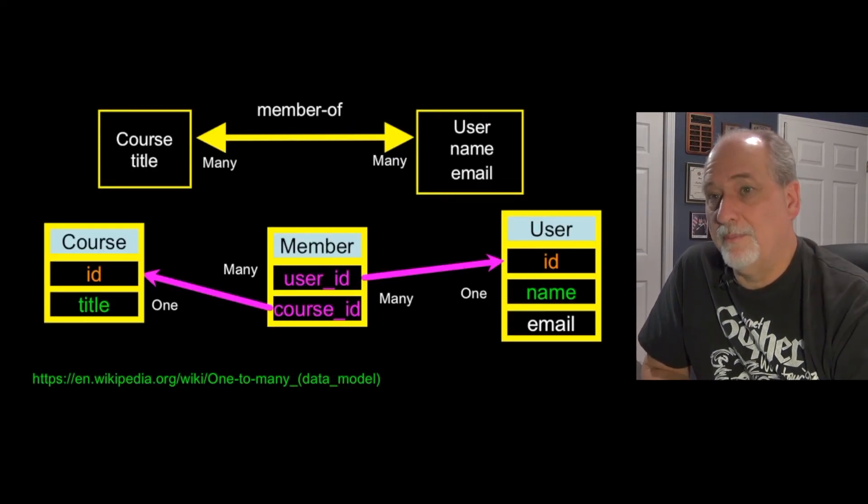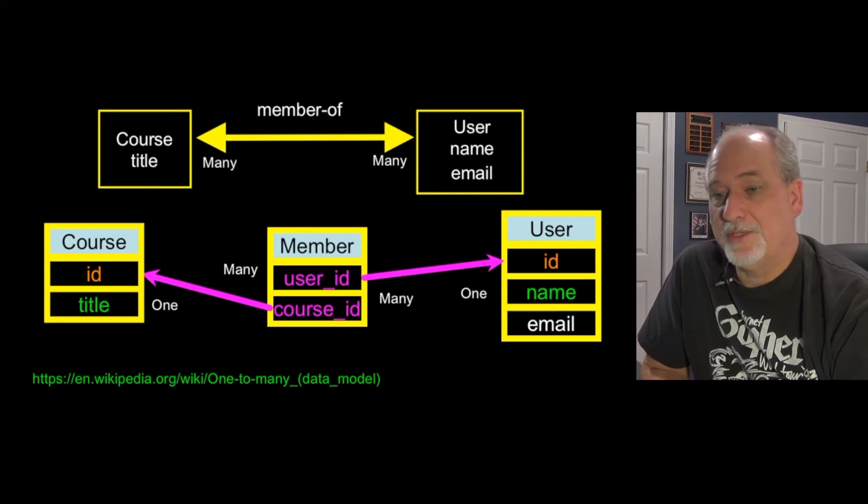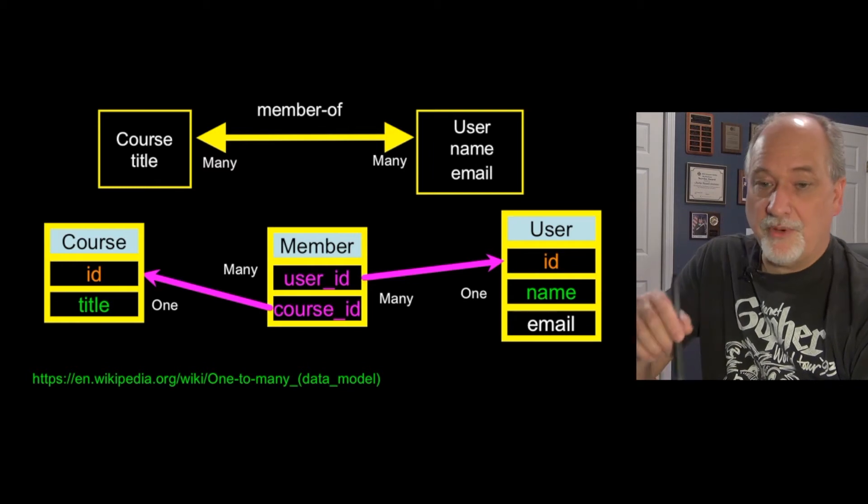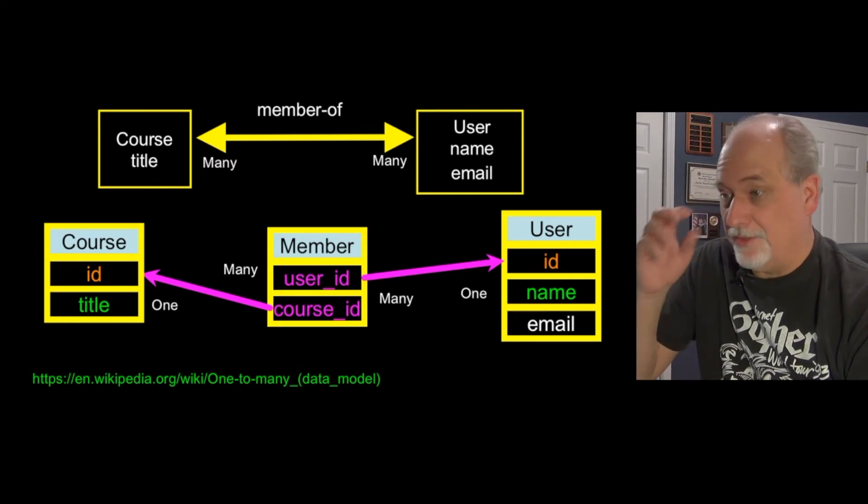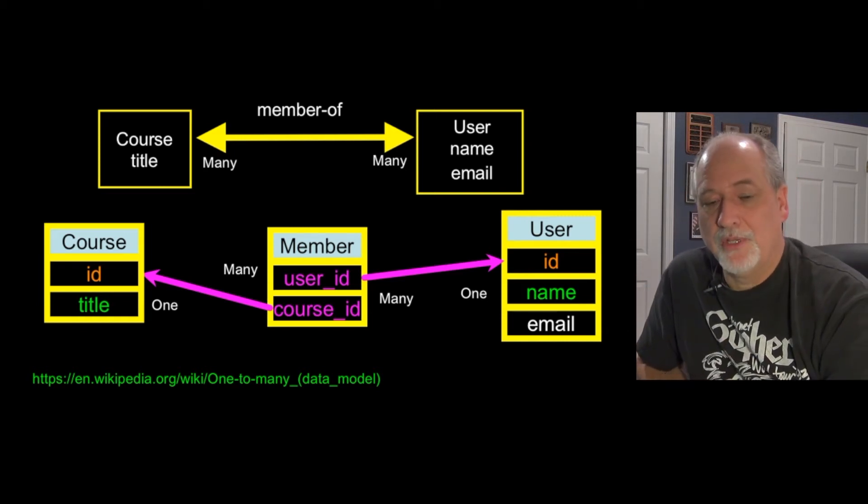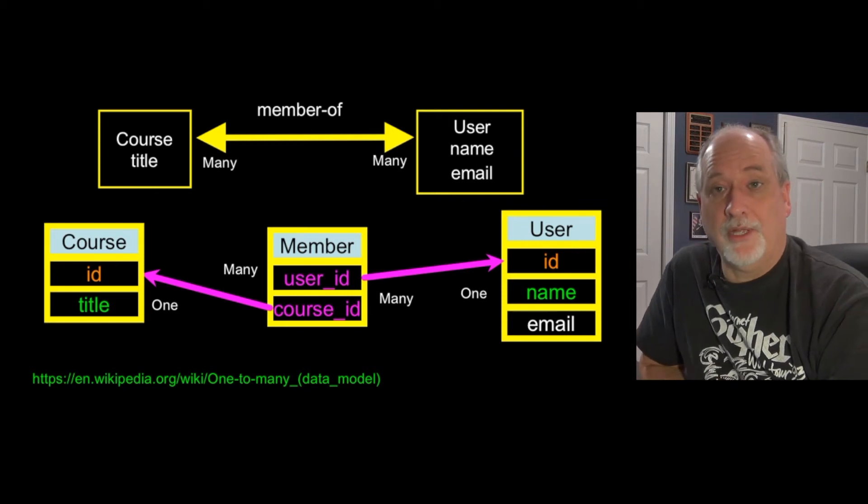Let's imagine a learning management system where you're taking a class and there are some people that are teachers and some people that are students. Many students are members of many classes - a student can be part of many classes and a class has many students in it. You can't really find the one end. So what we do is we make a table called membership. In that table of membership, we often don't put a primary key in at all.